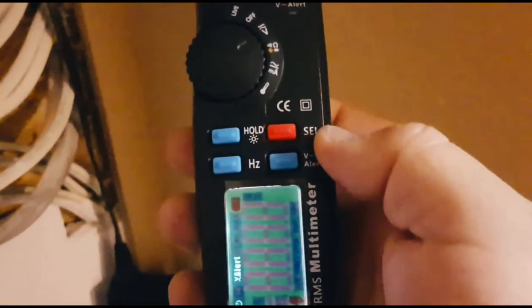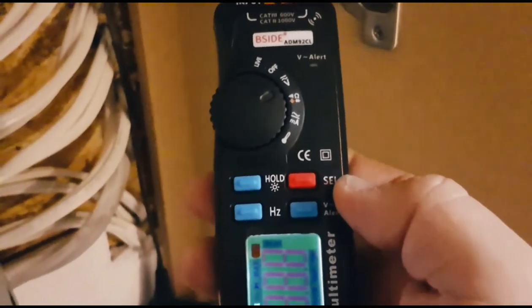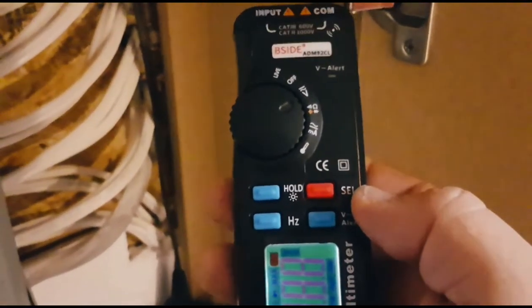Finally, the B-side also utilizes the non-contact voltage. Hold down on the blue button that says voltage alert. And they're up to a power source. And as you can see, it tells you that there is voltage there. Okay. Next, we're going to take this puppy apart and see what it's like on the inside.